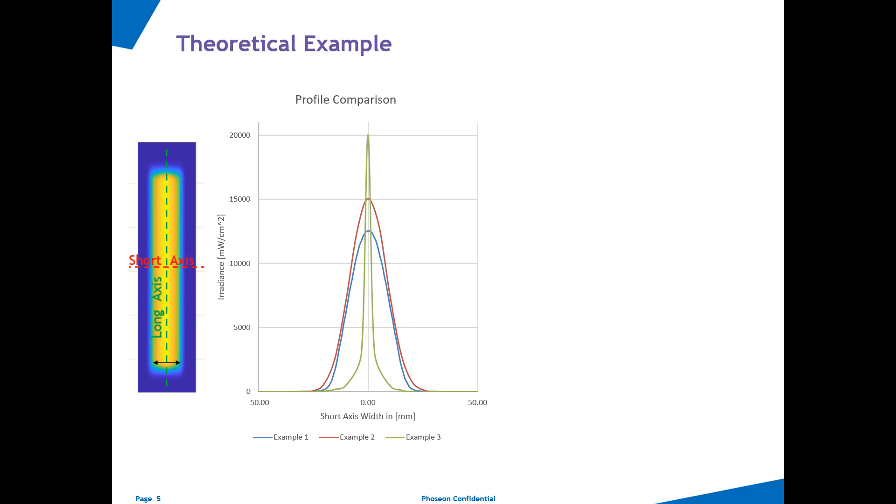In this example here, I've shown the theoretical short axis profiles of three types of LED lamps. You can clearly see that the green graph, for example number three, has the highest peak irradiance, while example two and one trail with 15 and respectively 12 watts per square centimeter. The total energy delivered to the substrate is, however, the area under these curves.